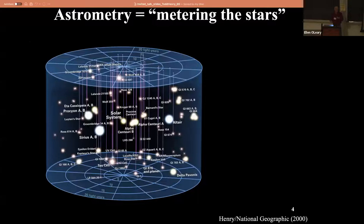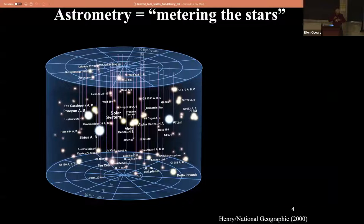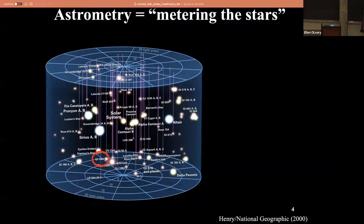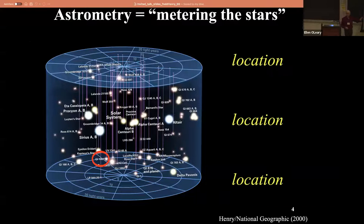You need a map. This is a map that we put together - we being the RECONS group. National Geographic and I worked together to do this map because we had discovered this little star here, a red dwarf, that's the 20th nearest star to the sun, and nothing has been found that's stellar, nearer than that since 1997. Astrometry is all about the old real estate mantra: location, location, location. So that's what you're here to do this week - figure out the locations of dots in the sky and find unseen dots next to them.